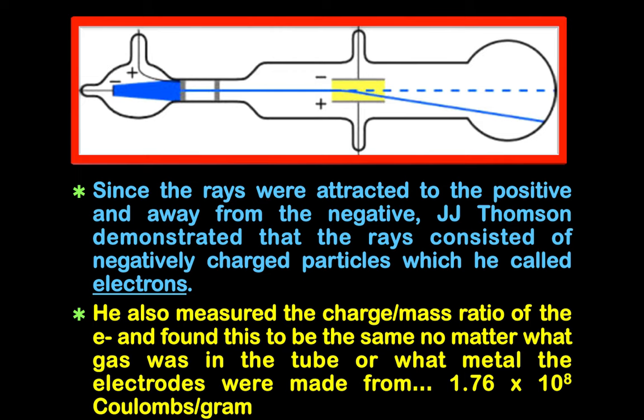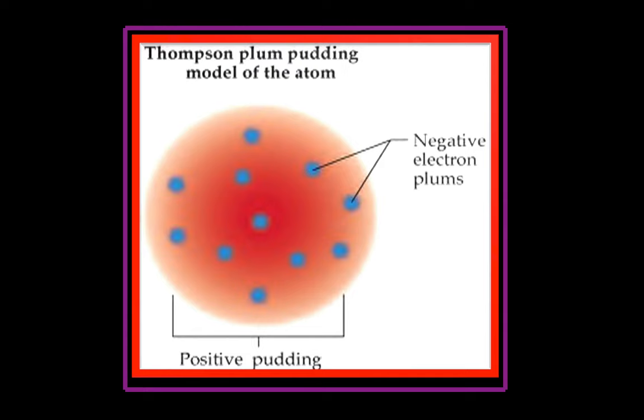Because it was known that the atom is electrically neutral, Thomson came up with the plum-pudding model of the atom. In this model, the atom was essentially made up of positive charge in which an equal amount of negative charge was distributed. This is called the plum-pudding model.